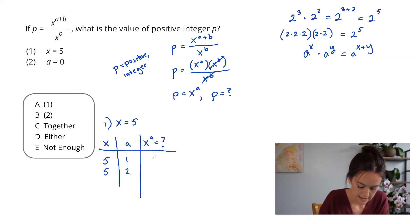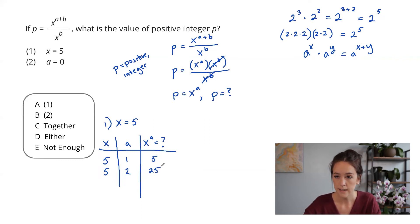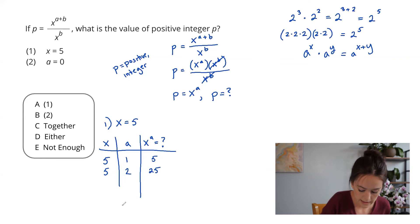If a is one, that means x to the a is five. And if a is two, that means it is 25. Because these are two different values, I now know that statement one definitively is not sufficient to answer the question. And that is going to let me eliminate choices a and d.